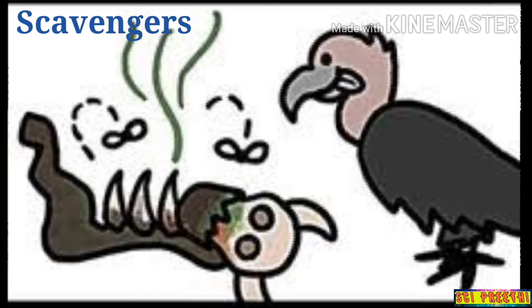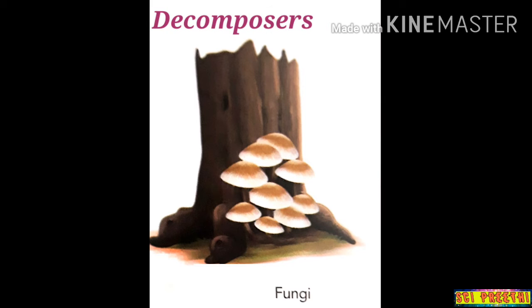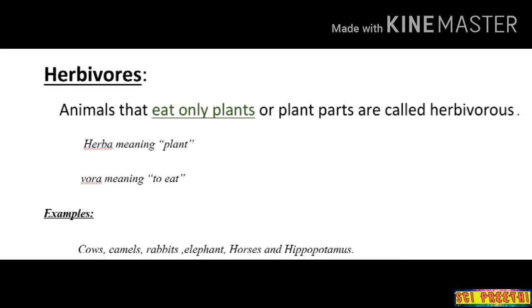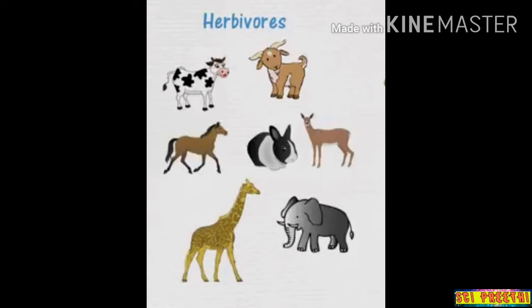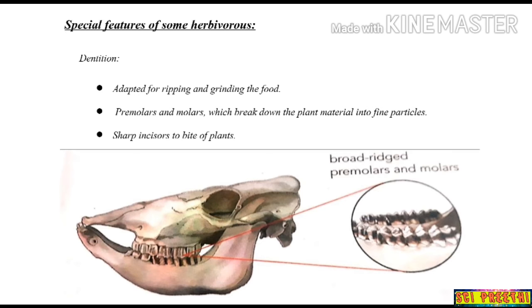Decomposers obtain nutrients by breaking down the remains of dead organic matter. Now we will look in detail at the eating habits of animals and their special features. Herbivorous animals eat only plants or plant parts. The term 'herbivorous' is derived from Latin words: 'herba' meaning plant and 'ora' meaning to eat. Examples of herbivorous animals include cows, camels, rabbits, elephants, horses, and hippopotamus.